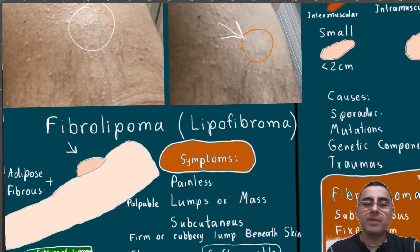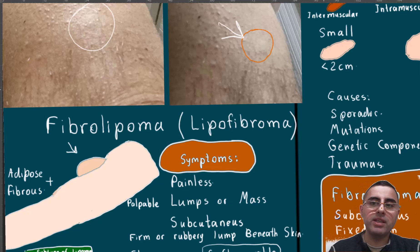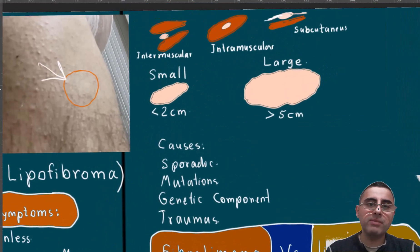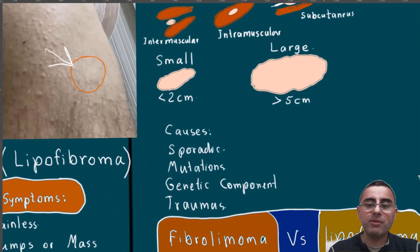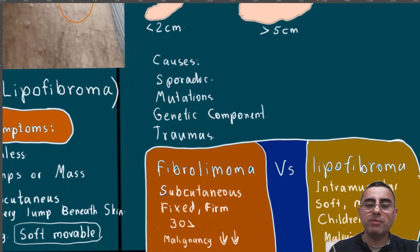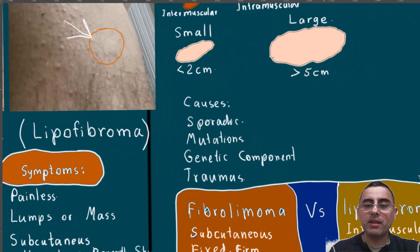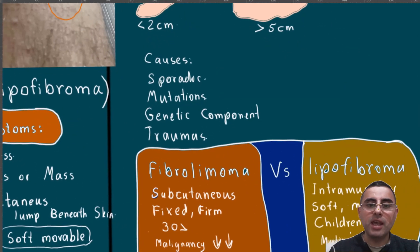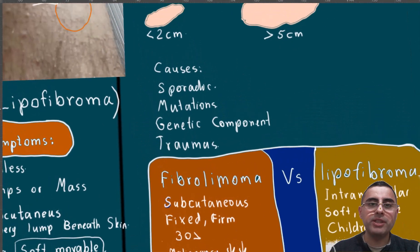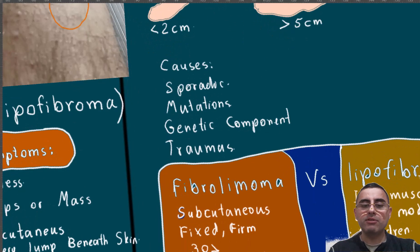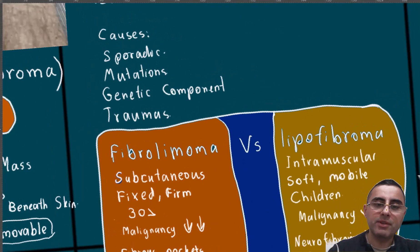We will discuss the most common features and differences between fibrolipomas and lipofibromas. They both are types of lipoma. Lipoma is the most common benign mass under the skin and is composed majorly of adipose tissue or fat.